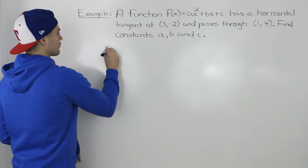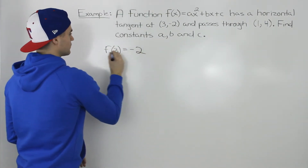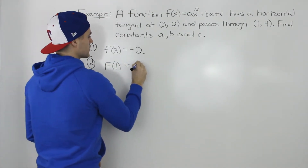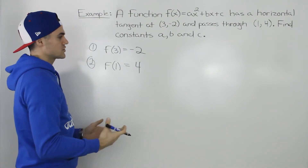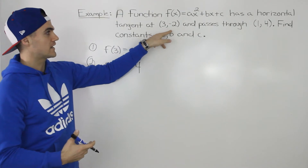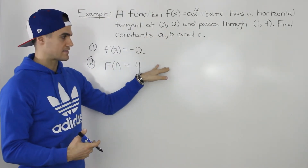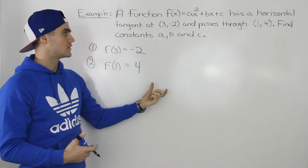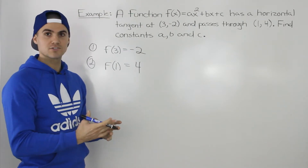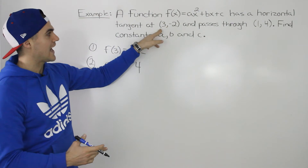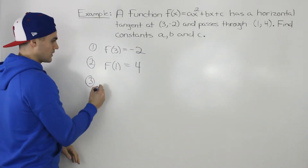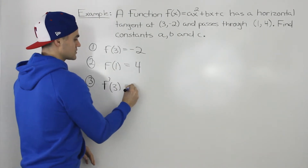We know that f(3) equals negative 2 — that's one equation we can make. We also know that f(1) is equal to 4 — that's another equation, because those are coordinates on the function. Now what about a third equation? Well we're told that there's a horizontal tangent at (3, -2). A horizontal tangent means the slope of that tangent is equal to 0, so the value of the derivative at that point is equal to 0. So the third equation we can make is f prime of 3 equals 0.